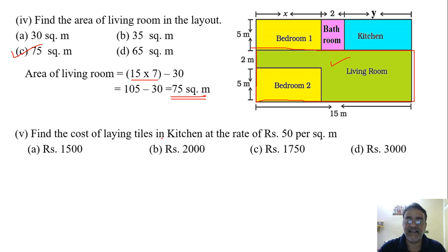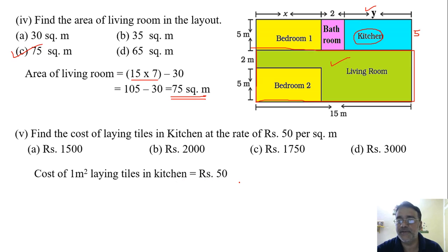Now we will move toward the last question. Find the cost of laying tiles in the kitchen at the rate of rupees 50 per square meter. Now we already got the value of y while solving the linear equation. y was 7. So what is the area of one kitchen? 5 into y. So 5 into 7, that is 35.